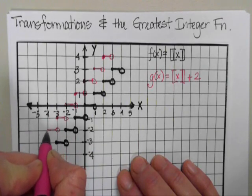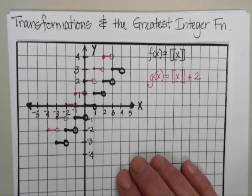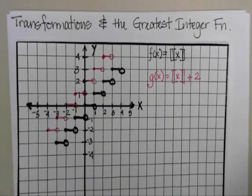That is how you graph greatest integer function using transformations. So I can approach this parallel or shift it up to.